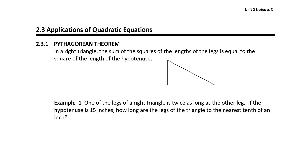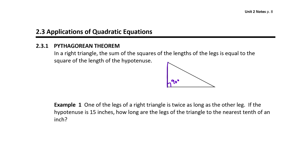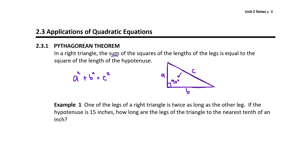In a right triangle — a triangle that contains one right angle, or an angle that measures 90 degrees — the sum of the squares of the lengths of the legs equals the square of the length of the hypotenuse. The legs are the segments that frame the right angle, and the hypotenuse is the side opposite the right angle. We name the legs A and B, and call the hypotenuse C, giving us A squared plus B squared equals C squared. This relationship holds true for any right triangle; if the triangle is not a right triangle, the Pythagorean Theorem does not apply.